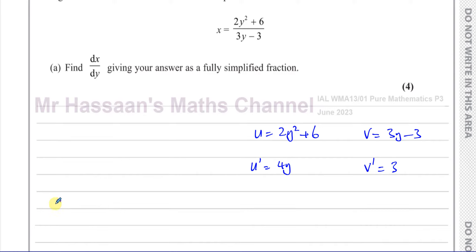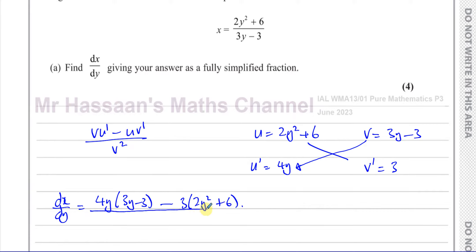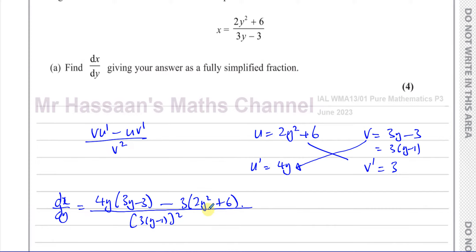Now we find dx/dy using the quotient rule formula: v times u' minus u times v', all over v squared. So we have 4y multiplied by (3y minus 3), minus 3 times (2y squared plus 6), divided by (3y minus 3) squared. To make it easier to simplify later, I'll write 3y minus 3 as 3 times (y minus 1), so the denominator is 3 times (y minus 1), all squared.